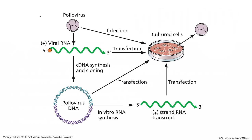All of this is based on a key finding: infectious DNA copies of virus genomes. None of the work we're going to talk about today could be done if you couldn't take a DNA copy of a viral genome, modify it, put it into cells, and have infectious virus particles come out. For poliovirus — an RNA virus — you can make a DNA copy of the RNA genome, and that DNA copy, when placed into cells, initiates an infectious cycle.